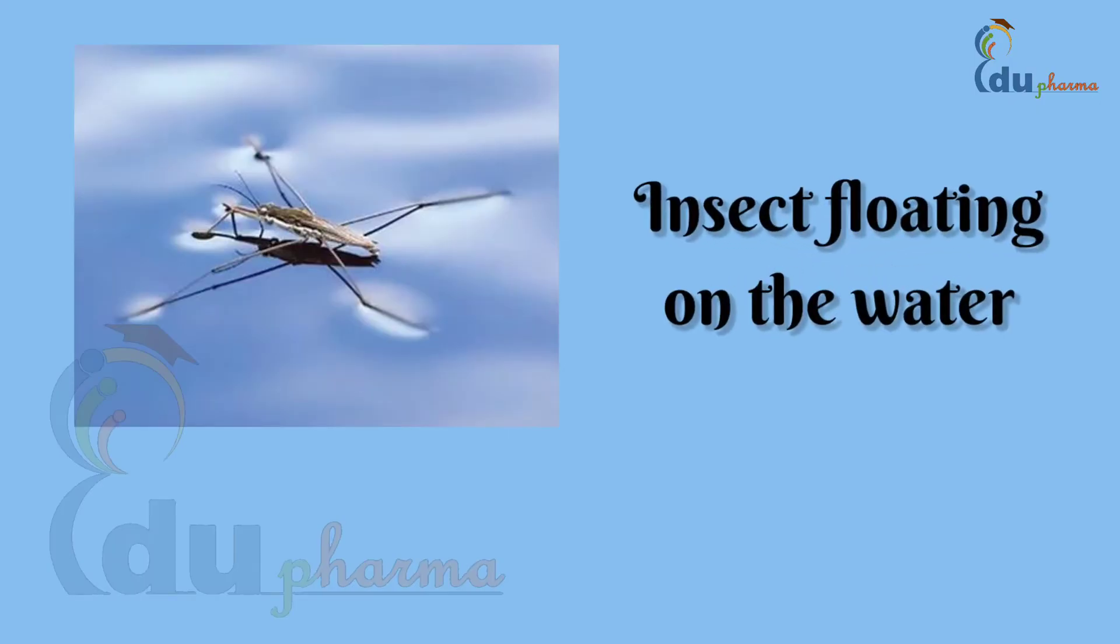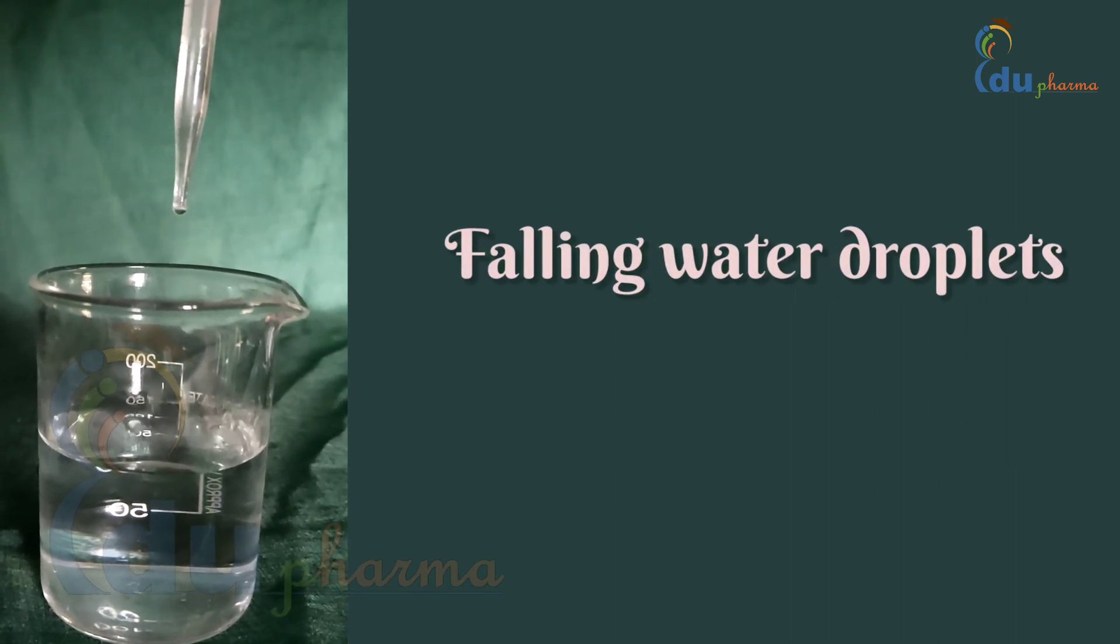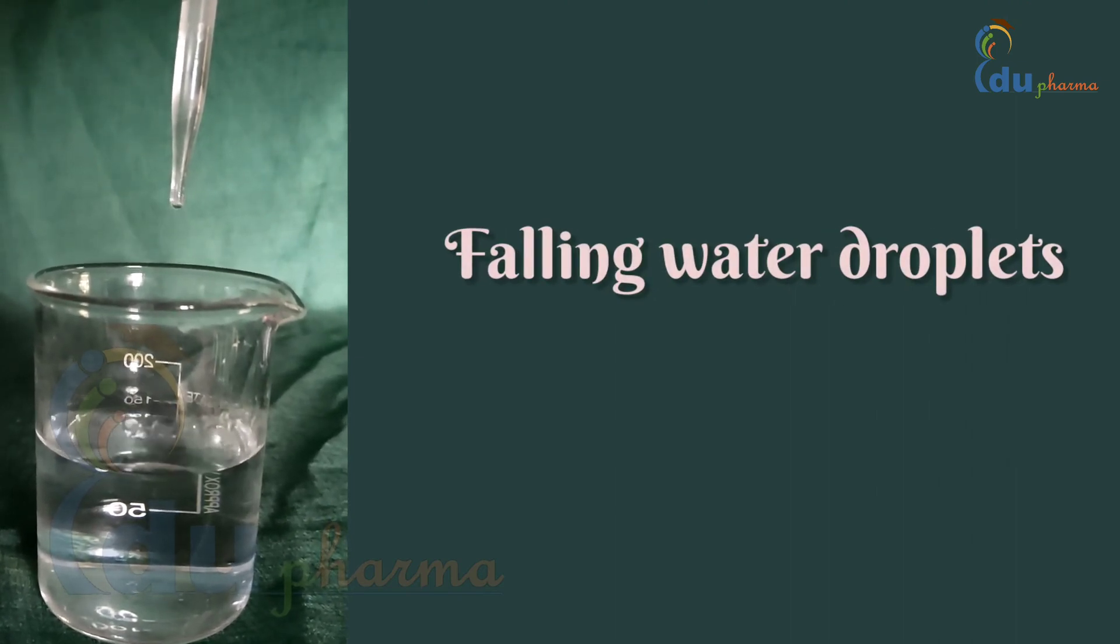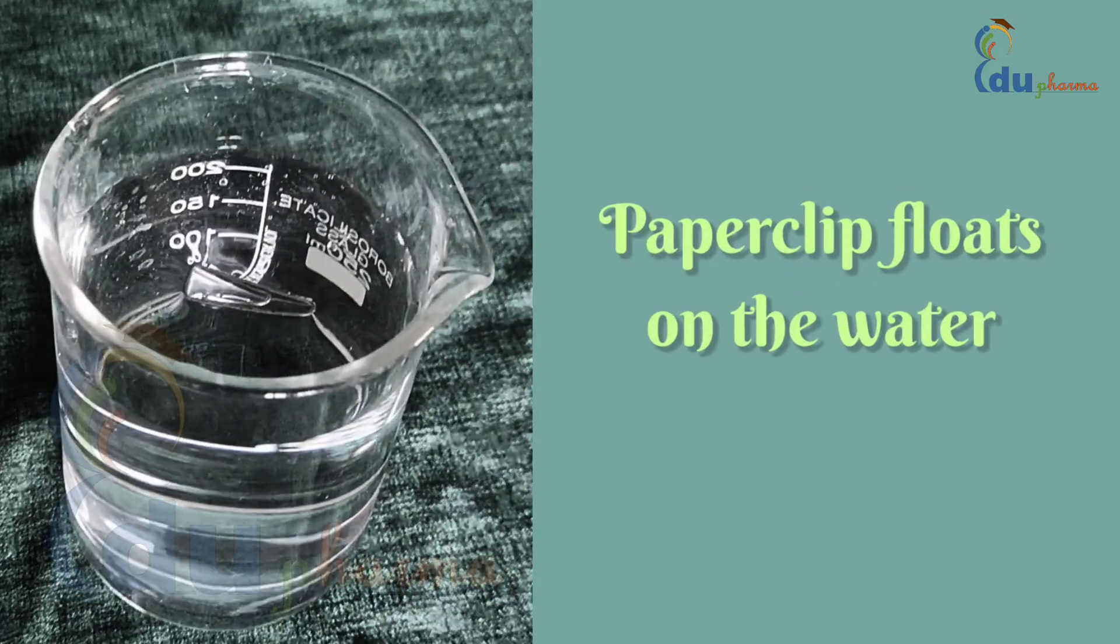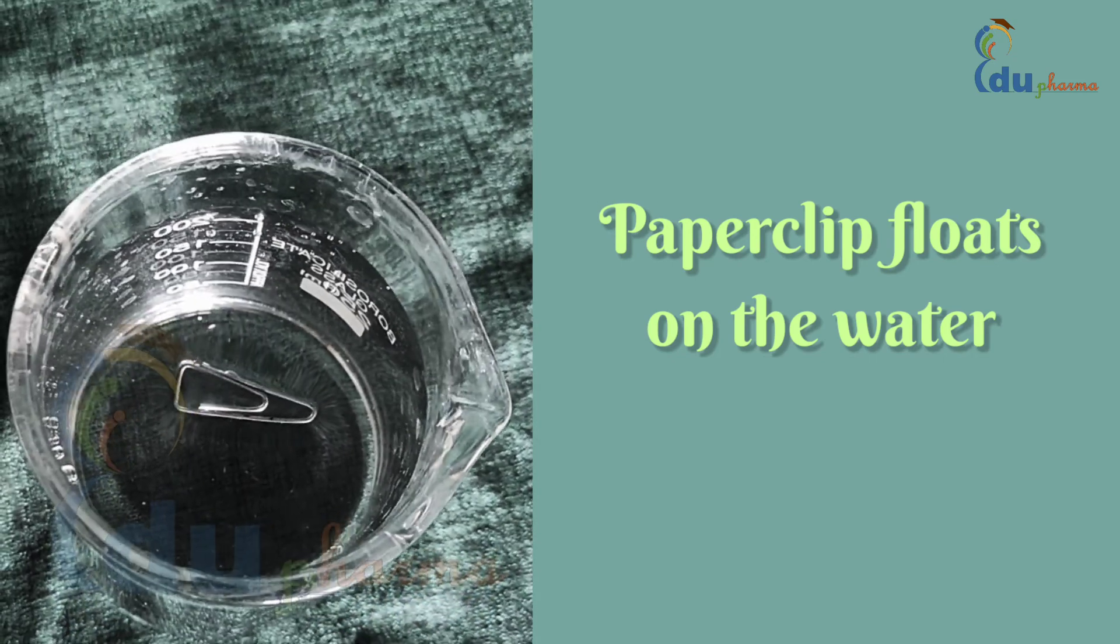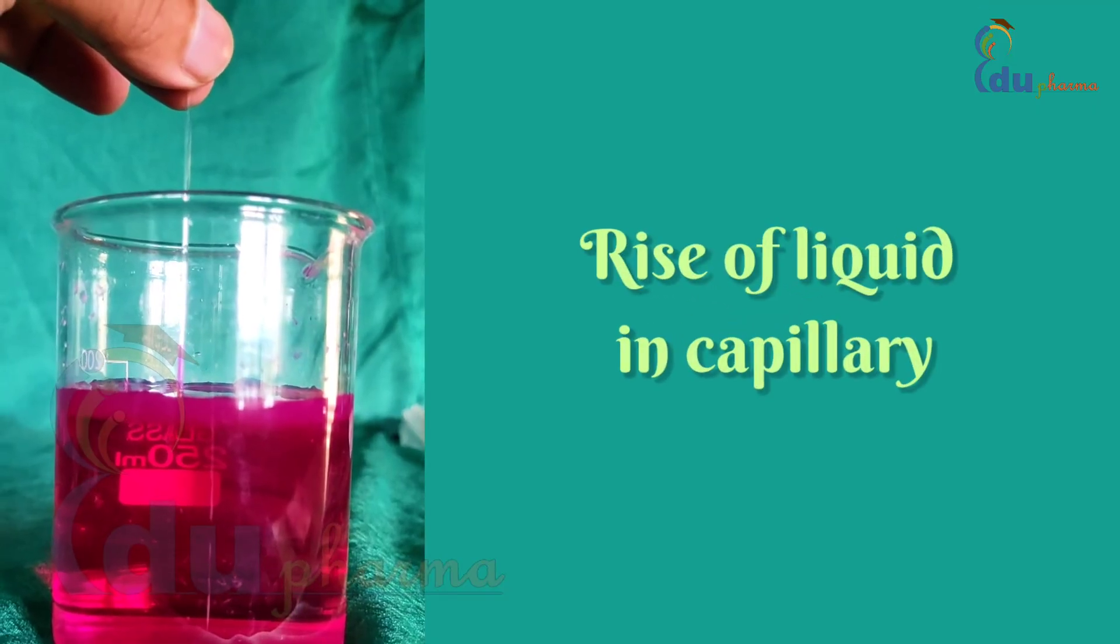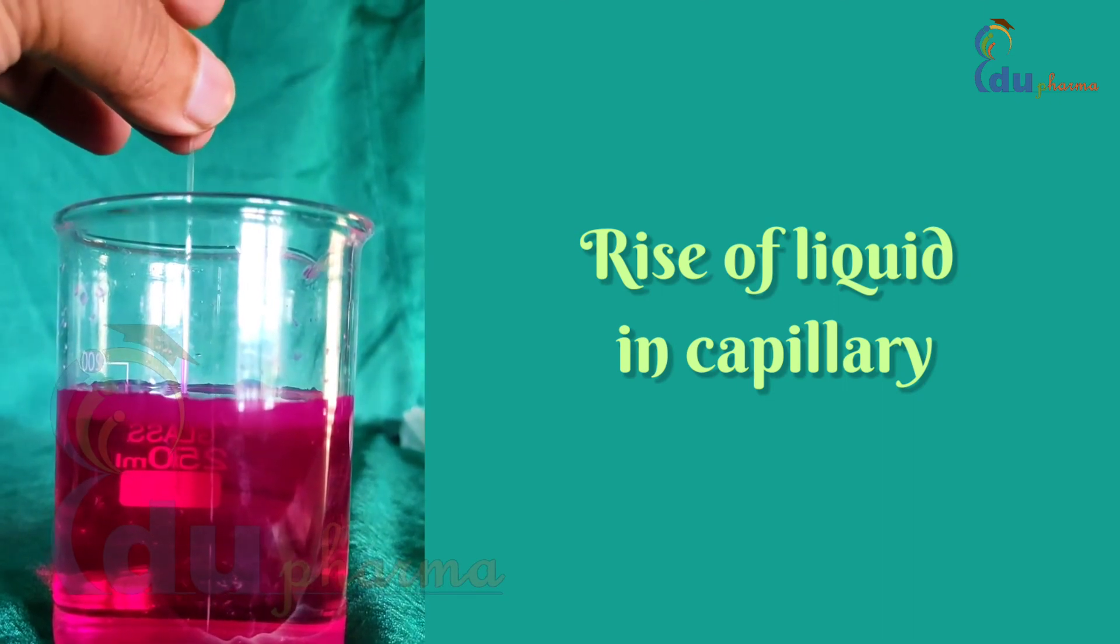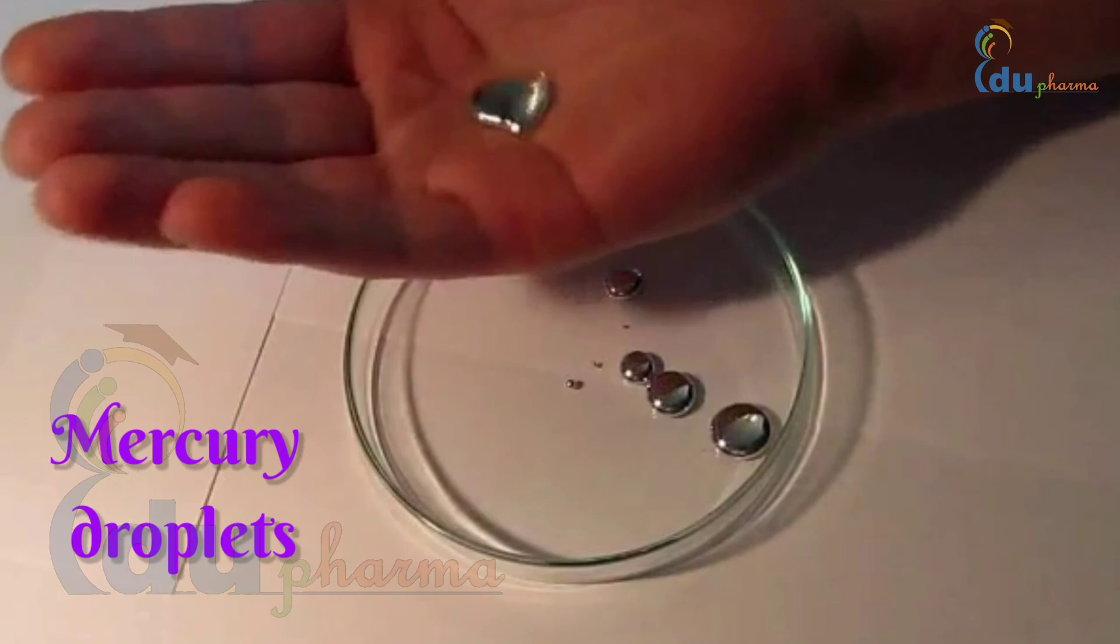Have you ever seen insects float on water, and the shape of falling water droplets is always nearly spherical? Why does a paperclip float on the water surface, although it is more dense than water? Have you ever thought why liquid rises in a capillary when it touches the surface of liquid, or have you ever wondered about the shape of mercury droplets?